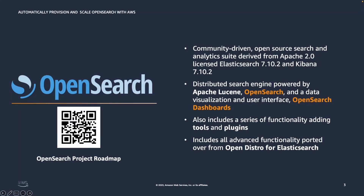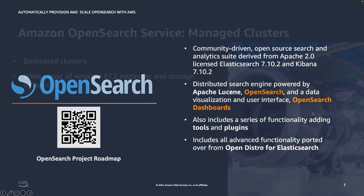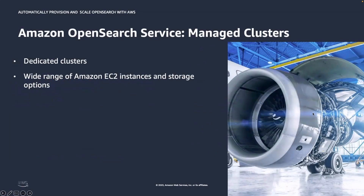OpenSearch is supported by AWS and all components are available under the Apache License version 2.0 on GitHub. The project roadmap is publicly available and it welcomes community contributions. Currently, customers can use Amazon OpenSearch Service, which is a fully managed service that helps customers run the open source OpenSearch software at scale. Customers need to create a dedicated domain per type of workload — search or log analytics — and configure that workload to make it performant for each use case.